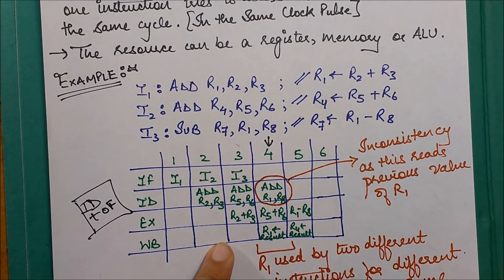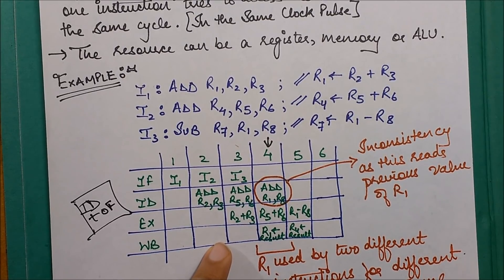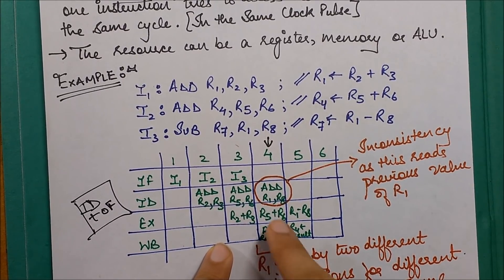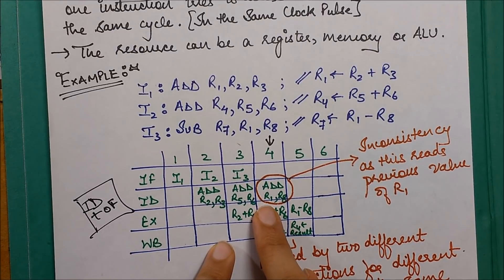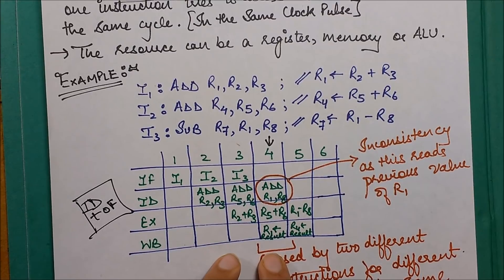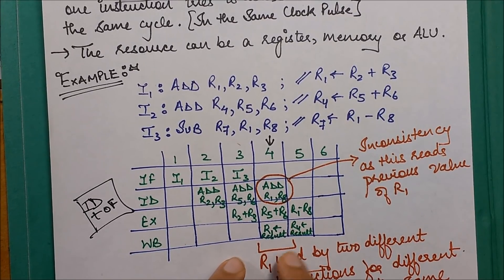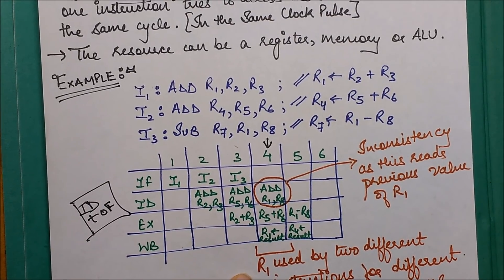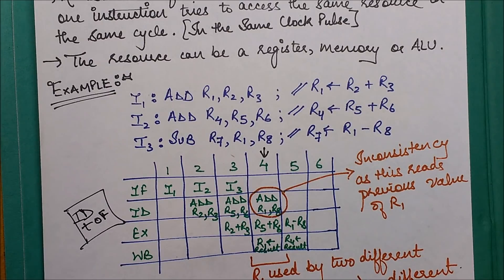You can clearly figure out the problem. At one point you're fetching a previous value stored in it, and at the second point you're trying to write back and override the value present in R1. This is an inconsistency.